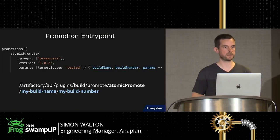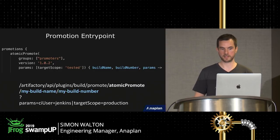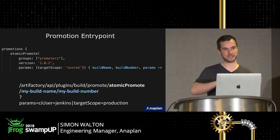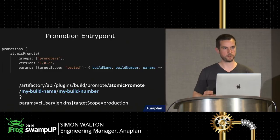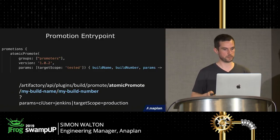Then we open a query string. The way query strings work in Artifactory is a bit awkward — you have query string parameters, but you also want to link some into the `params` attribute in the closure. The way you do that is by using a Unix pipe character as a delimiter. So in this case I've said `ciUsers=jenkins` and `targetScope=production` — that's how I pass my parameters in.